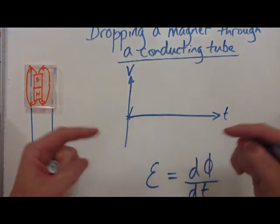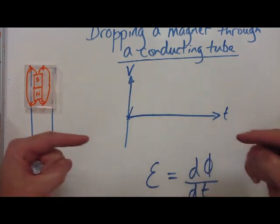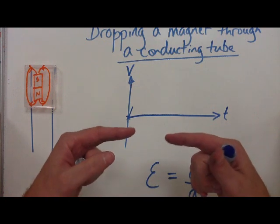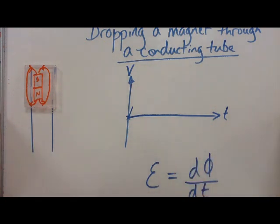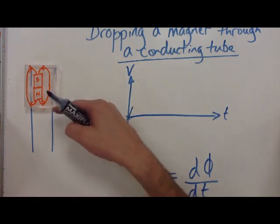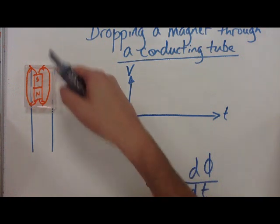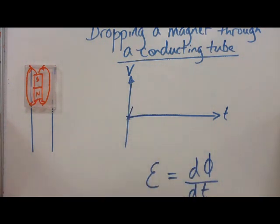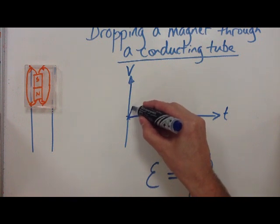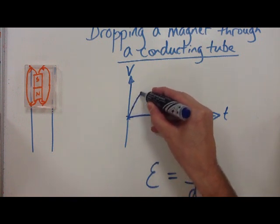The south field lines — the ones coming inwards — are giving conflicting EMFs to the electrons. Electrons at the bottom are being pushed one way by the field lines coming out, and at the top they're being pushed the opposite way. So the overall EMF across the tube starts to decrease.